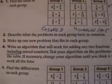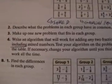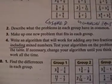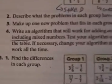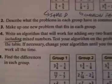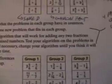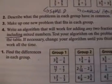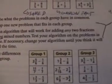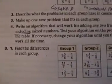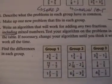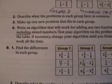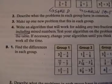Describe what problems they have in common. Make up one new problem that fits each group. Write an algorithm that will work for adding any two fractions, including mixed numbers. Test your algorithm on the problems in the table. If necessary, change your algorithm until you think it will work all the time.